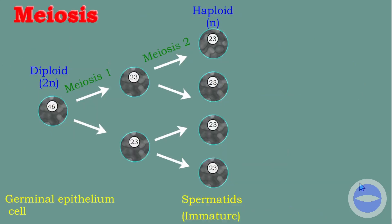Here we have one germinal epithelium cell, which is diploid — as humans, we have 46 chromosomes. This cell undergoes meiosis one, producing two cells each with 23 chromosomes. Meiosis halves the number of chromosomes from the parent cell. These cells then undergo meiosis two, and each cell produces two cells with the same number of chromosomes. In total, we have four daughter cells, each with 23 chromosomes — half the number of the original cell.